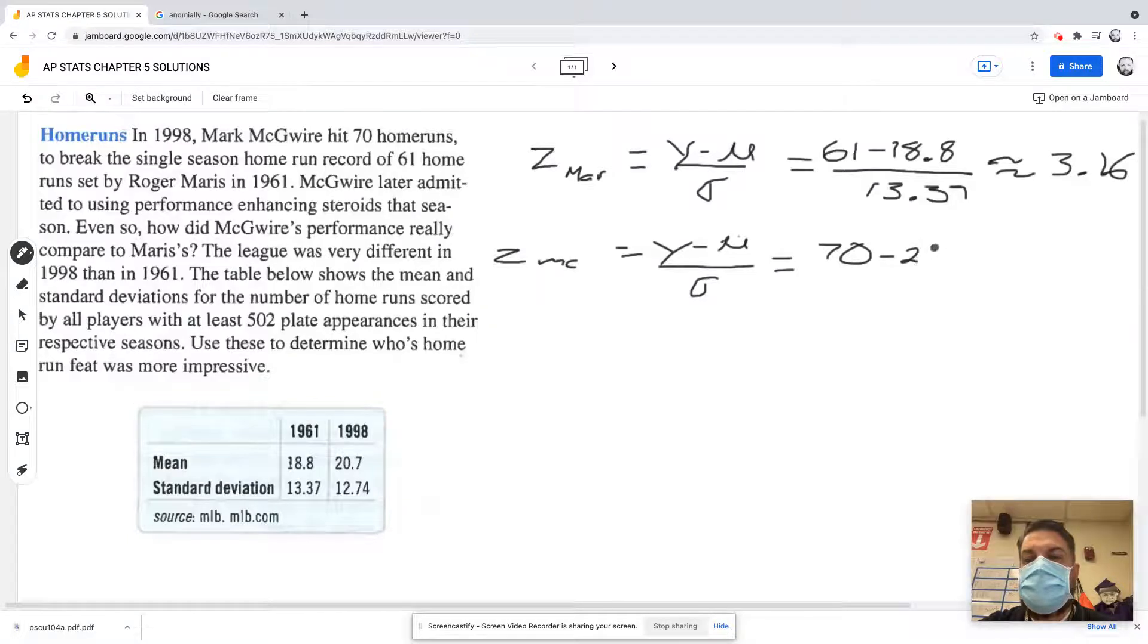Minus 20, it's hard to talk and do math at the same time, over the standard deviation which for his era was 12.74. If I plug that in the calculator he's got 3.87.